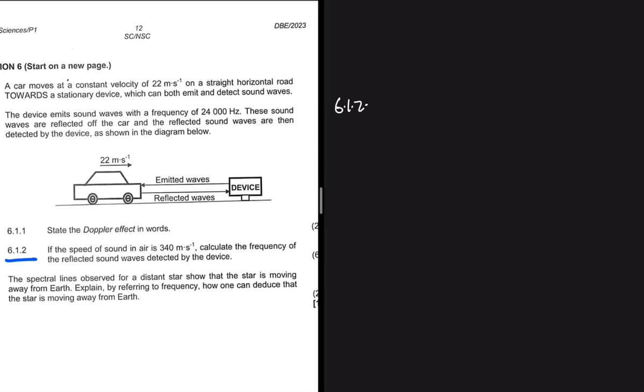As shown in the diagram, if the speed of sound in air is 340 meters per second, let's calculate the frequency of the reflected sound waves detected by the device.